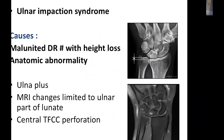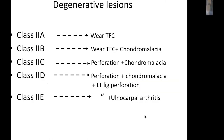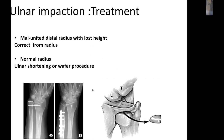Regarding ulnar abutment syndrome, the patient has a positive ulnar variance, either anatomical or due to malunited distal radius. MRI is diagnostic when changes are limited to the ulnar side of the wrist, and arthroscopy reveals central TFCC perforation. Treatment is either lengthening the distal radius in malunion cases, or ulnar shortening osteotomy (diaphyseal or wafer procedure).